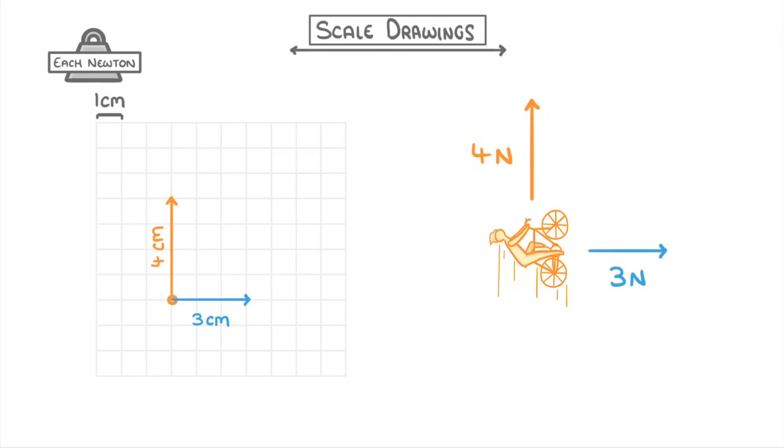Now that we have a scale diagram, we can find the magnitude and direction of the resultant force by placing these two vector arrows tip to tail, which we could do by moving this one up here, so that the tip of the north vector is just touching the tail of the east vector.